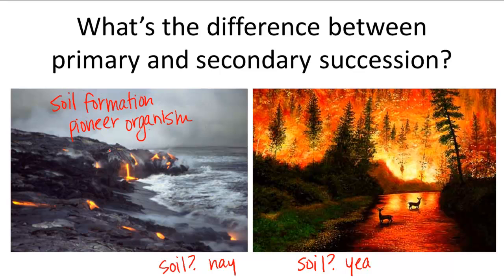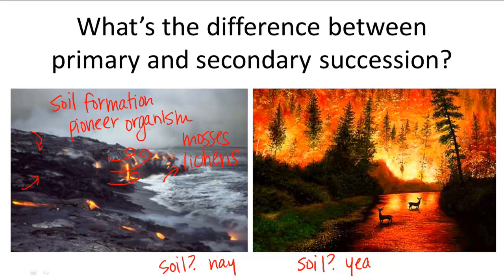These pioneer organisms are generally mosses and lichens. They are spore-bearing plants because spores are light and easier to carry over by the wind. These pioneer organisms, particularly lichen, have a special feature that helps the process of soil formation. Lichens are able to secrete toxins into the rocks and break them down into soil. This is one of the first steps of soil formation. Soil formation can also occur over time through the wearing down of rocks by weather and by water.